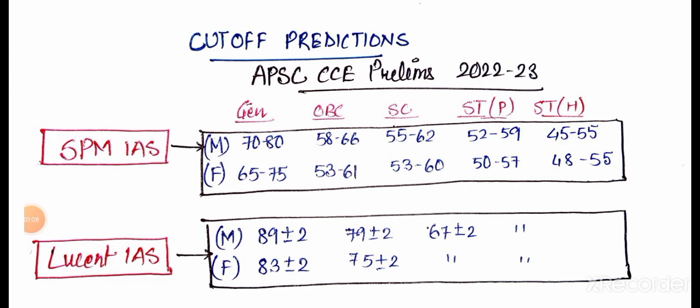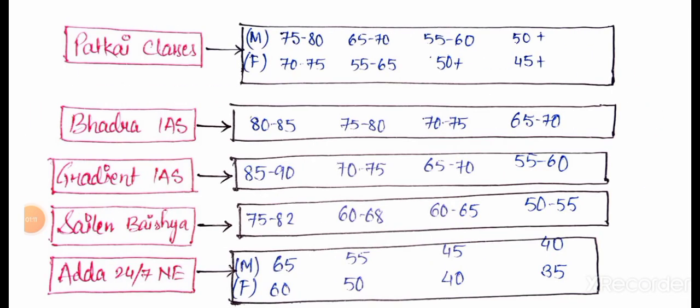Then there are some classes on YouTube channel. They have said general male 75 to 80 and then OBC 65 to 70, SC 55 to 60, and ST 50 plus.